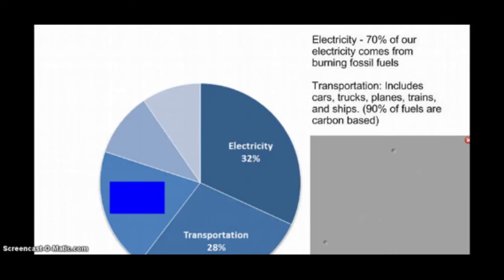The next biggest category is transportation. Transportation includes cars, trucks, planes, trains, ships. And of all those things, 90% of the fuels in those things are carbon-based. So electricity is 32%, transportation is 28%.